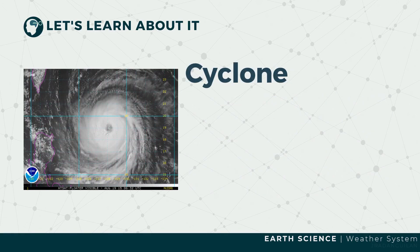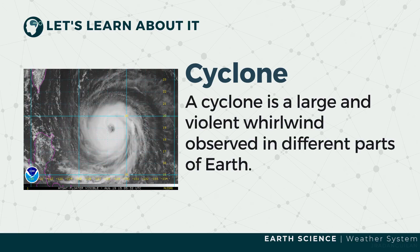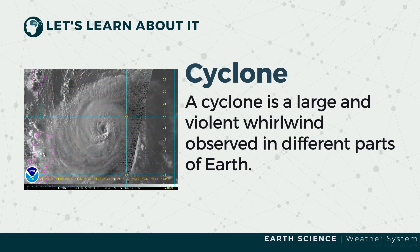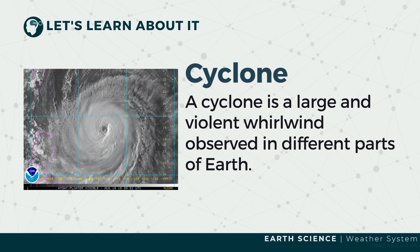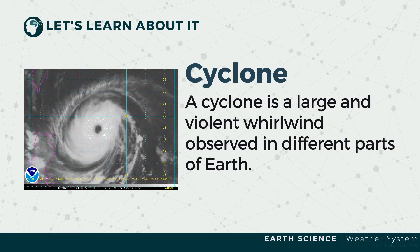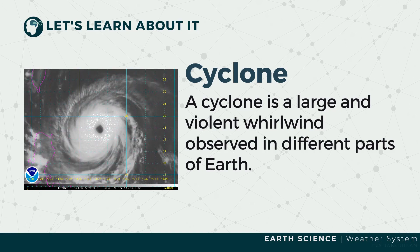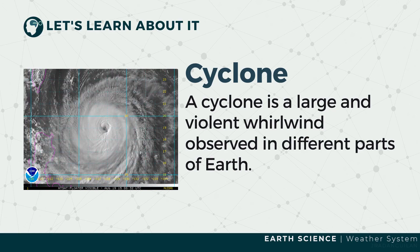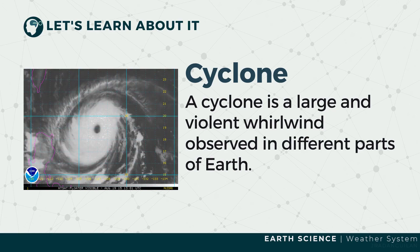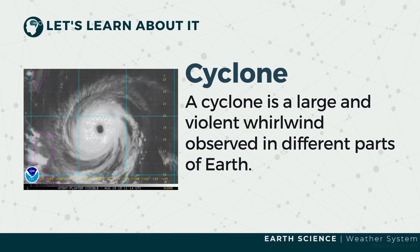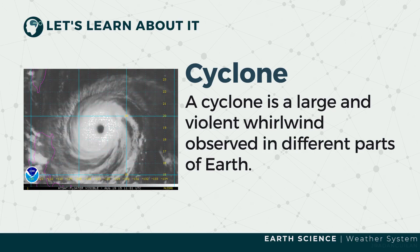A cyclone is a large and violent whirlwind observed in different parts of the Earth. Tropical areas such as the Philippines use the term tropical cyclones. Cyclones bring violent winds and thunderstorms to the affected areas. They move in a spiral motion wherein the center is called the eye of the storm.